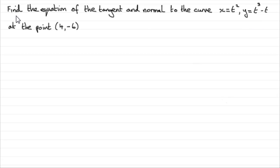What we've got here is find the equation of the tangent and normal to the curve, the parametric curve x equals t squared and y equals t cubed minus t. And we've got to find that equation of tangent at the point 4 minus 6.